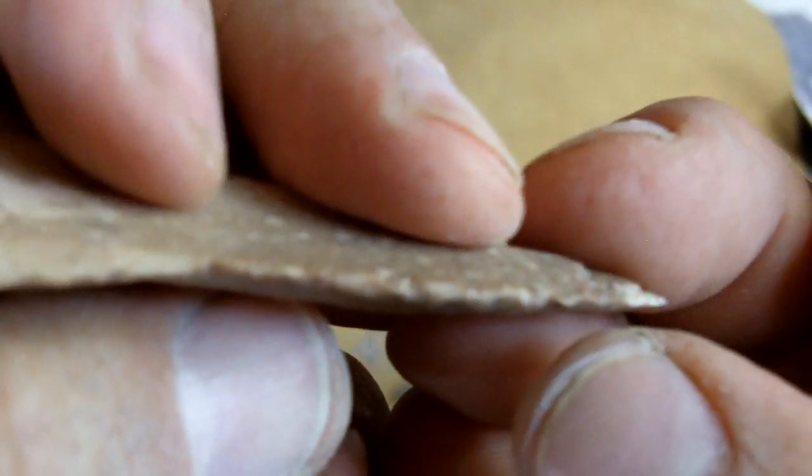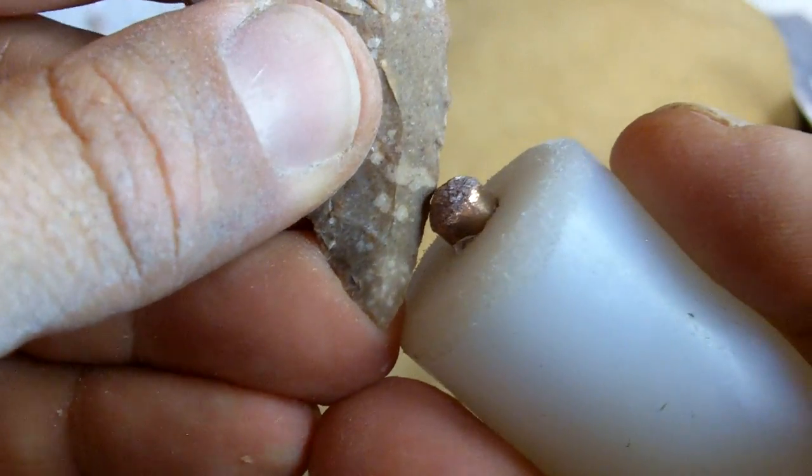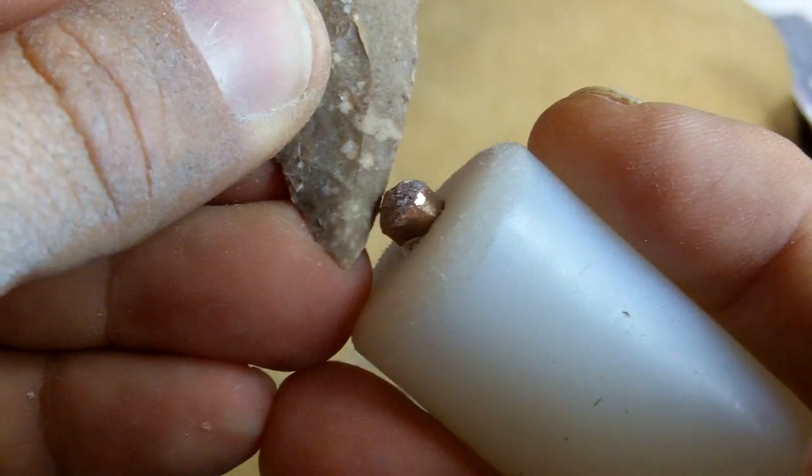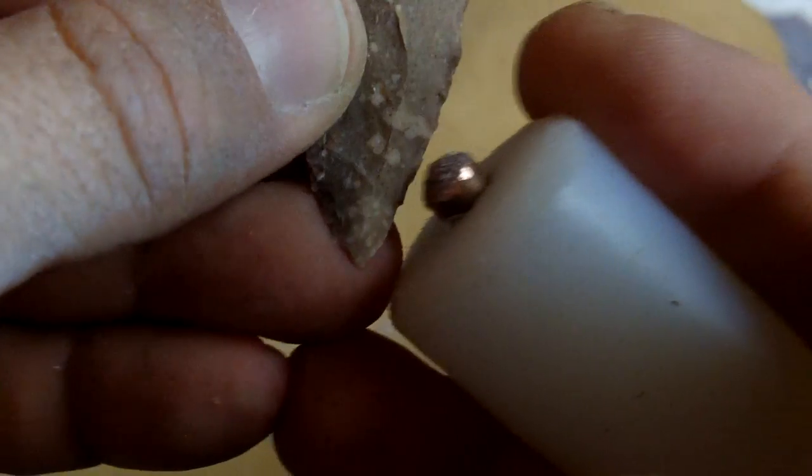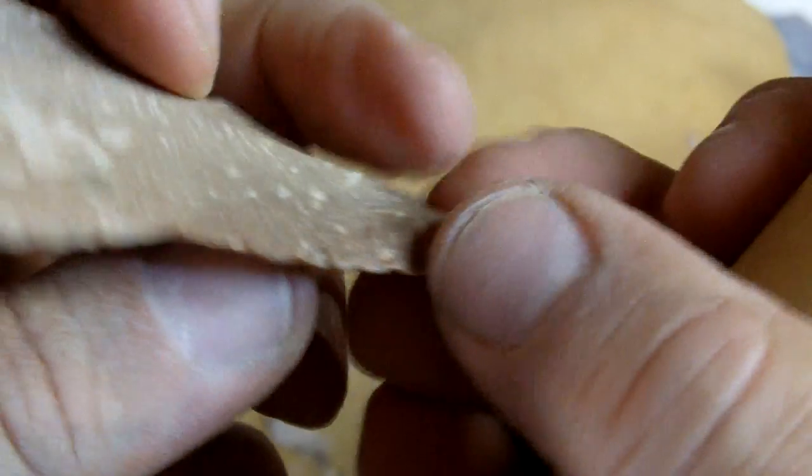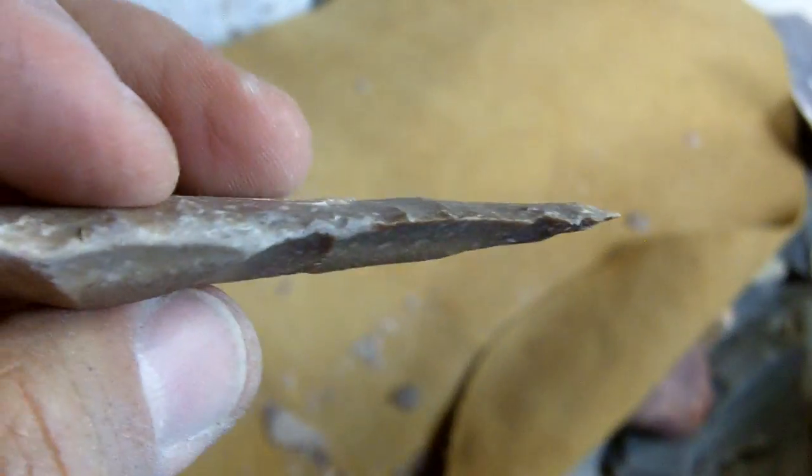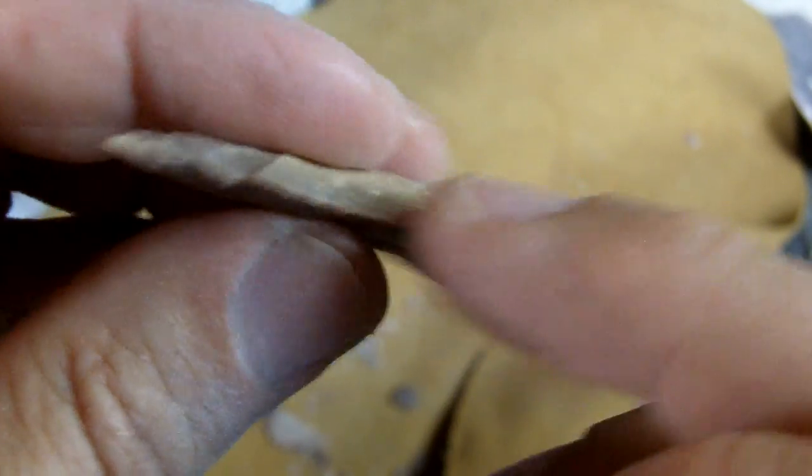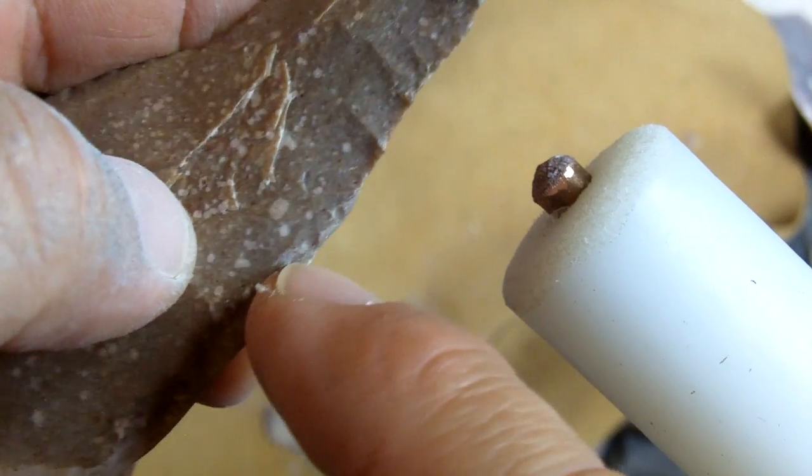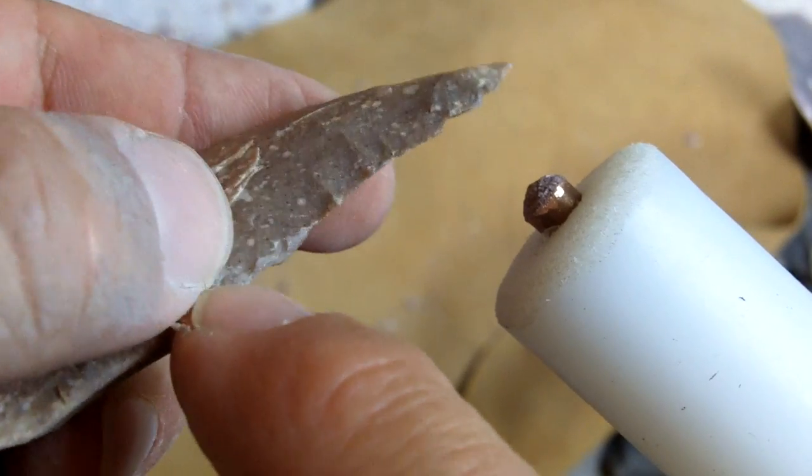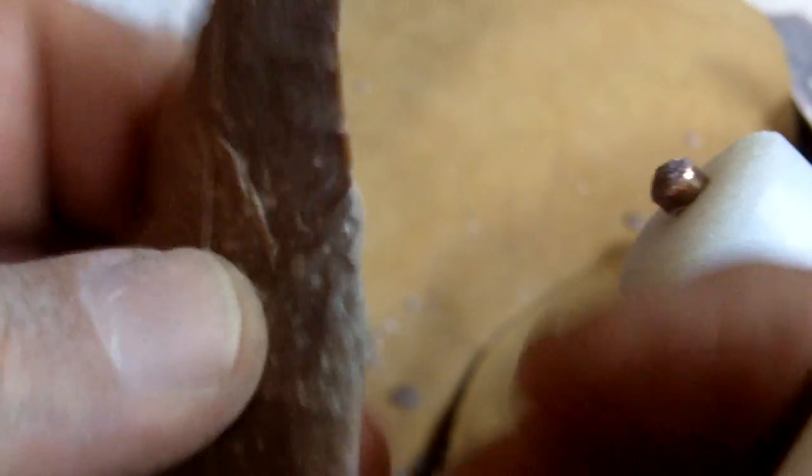Now I'm having to hit it pretty hard because of those really thick ground edges. But indirect percussion is good for stability because you're really focusing a lot of force with a hard point to break the surface tension and initiate the flake easily. So you're not putting a lot of shock, you're not shocking this workpiece very much.